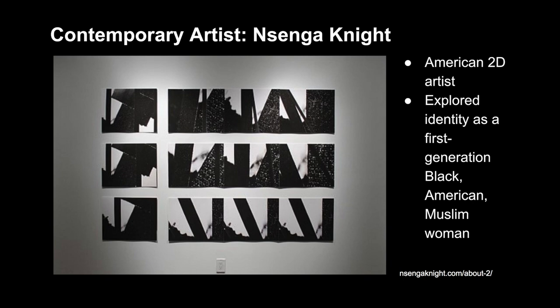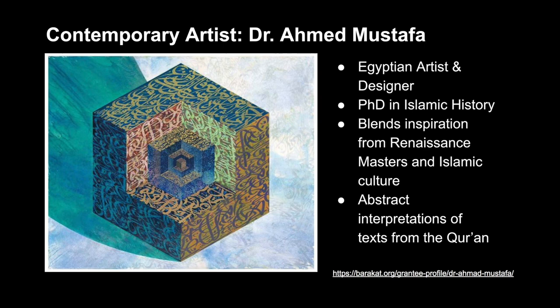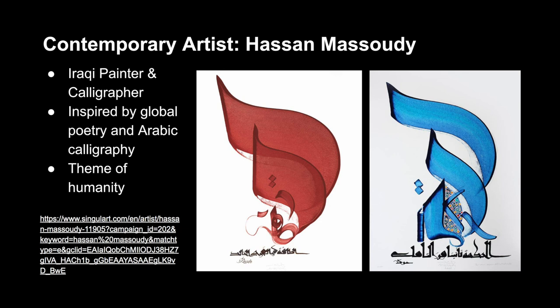Now I'm going to flip through some contemporary artists. I've listed some brief descriptions of their artwork and an example, but please feel free to investigate them further if you want to see more of their work. Here we see work by an American artist working primarily in 2D media, exploring her own identity as a first generation black American Muslim woman. Next we have an artist and designer from Egypt who has a PhD in Islamic history and blends inspiration from Renaissance masters with Islamic culture, using abstract interpretations of texts from the Quran. Next we have an Iraqi painter and calligrapher inspired by global poetry and Arabic calligraphy while utilizing themes of humanity.